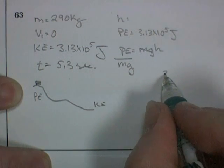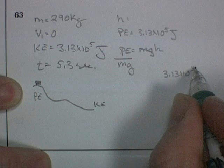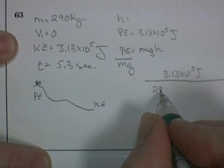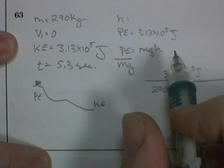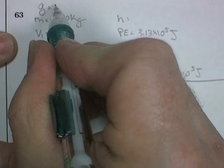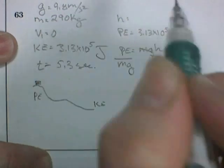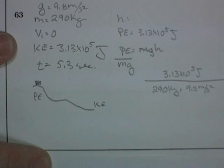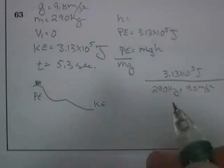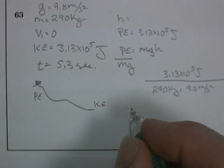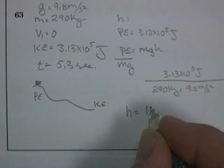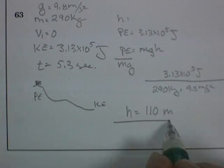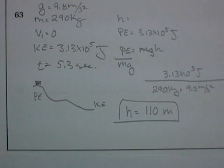So we plug in 3.13 times 10 to the 5 joules. We divide by our mass, which was 290 kilograms, times g, which is the acceleration due to gravity, 9.8 meters per second squared. And then we get out our calculator. And if you punch in the numbers like I did, you get a height of 110 meters. And it was 110.1, but 110 meters is going to get us the correct answer.